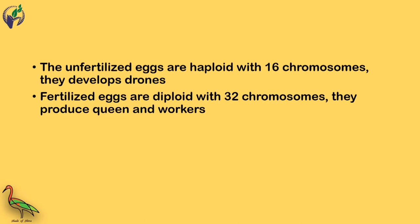Drones are developed from unfertilized eggs. They are haploid with 16 chromosomes. Queens and workers are produced from fertilized eggs and are diploid with 32 chromosomes.